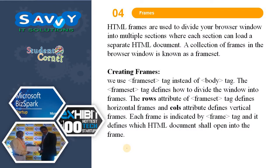The last concept is frames. HTML frames are used to divide your browser window into multiple sections, where each section can load a separate HTML document. A collection of frames in the browser window is known as a frameset — it allows more than one HTML page to be displayed in a single browser window. We use the frameset tag instead of the body tag. The frameset tag defines how to divide the window into frames. The rows attribute defines horizontal frames and the columns attribute defines vertical frames. Each frame is indicated by the frame tag, which defines which HTML document shall open in the frame.